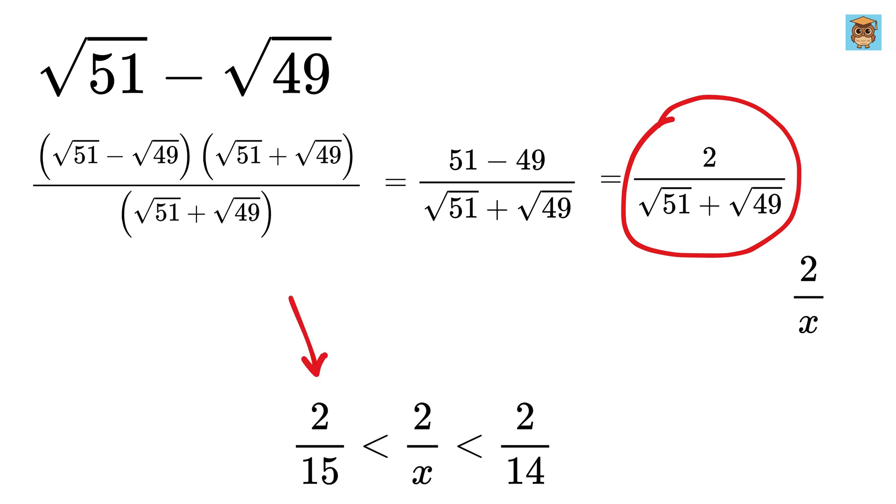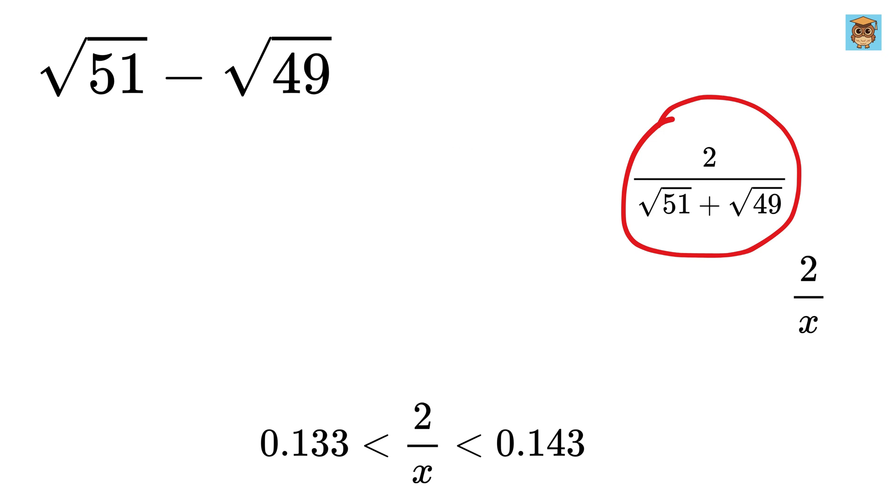2 divided by 15 is 0.133, and 2 divided by 14 is 0.143. Therefore our answer lies somewhere between this and this.